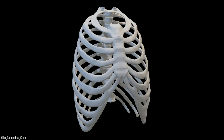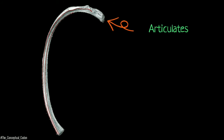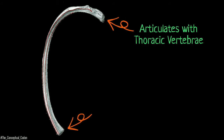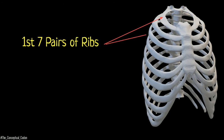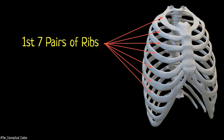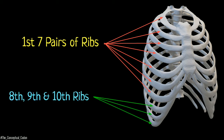Most of the thoracic cage is formed by ribs. They are curved thin bones that articulate posteriorly with the thoracic vertebrae and anteriorly end in costal cartilages. The first seven pairs of ribs articulate with the sternum, whereas the eighth, ninth, and tenth ribs articulate with each other and don't reach the sternum. The eleventh and twelfth pairs are small and end in free cartilaginous tips.